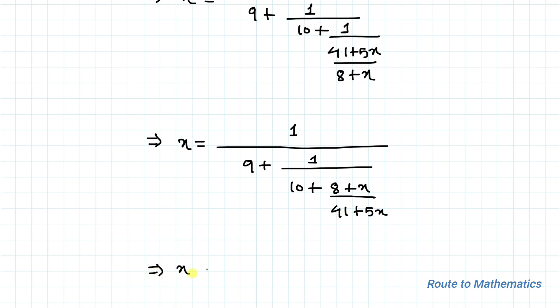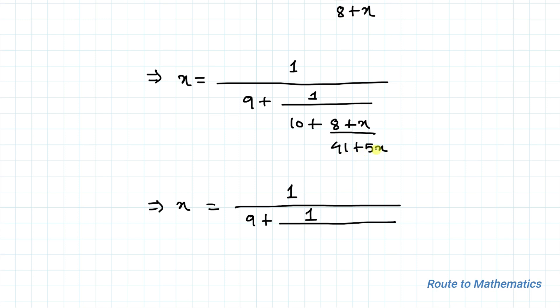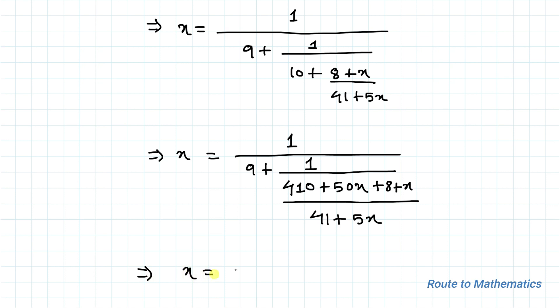Again we'll take LCM. We have x equals to 1 by 9 plus 4 times 10, we have 4 times 10 plus 50x plus 8 plus x divided by 41 plus 5x.